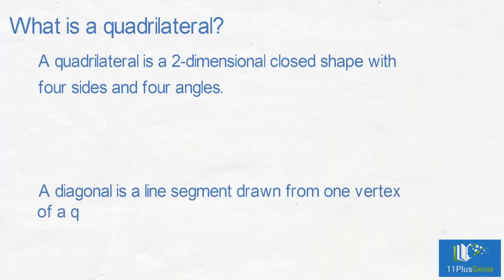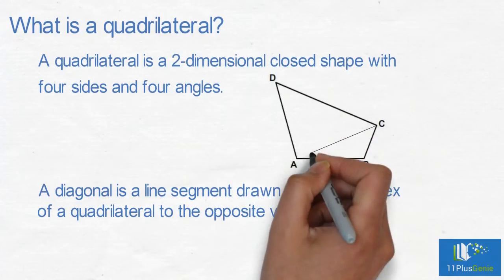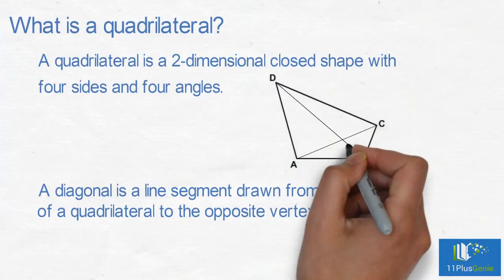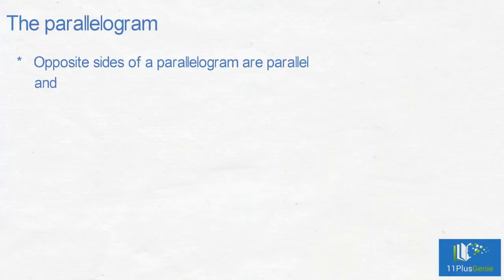The shape ABCD shown here is a quadrilateral. AC and BD are diagonals of quadrilateral ABCD. Parallelogram: opposite sides of a parallelogram are parallel and equal in length.